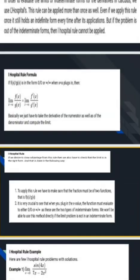Here we have seen that L'Hôpital's rule. If we desire to draw advantage of this rule, we can also have to check the limit is in the right form. And that is done in the following ways. To apply this rule, we have to make sure that the fraction must be of two functions, that is f(x) by g(x). It is very crucial to see that when you plug in the x value, the function must evaluate to either 0 by 0 or infinity by infinity. As with these two types of indeterminate forms, we won't be able to use this method directly if the limits problem is not an indeterminate form.